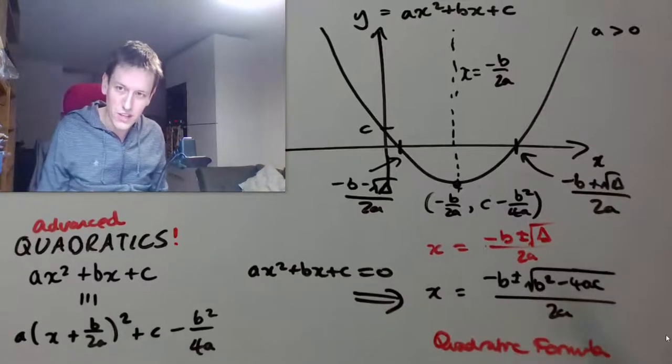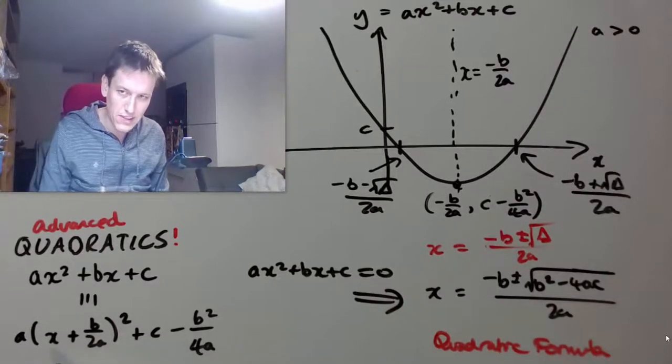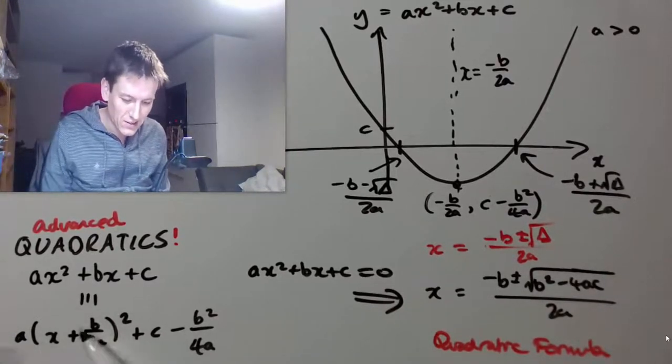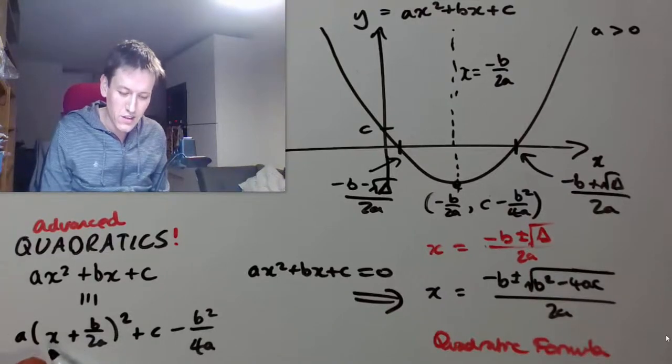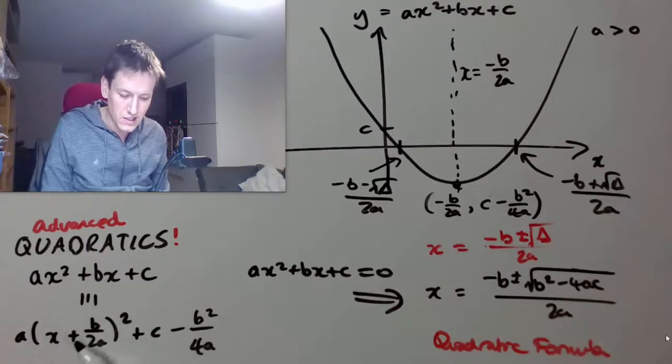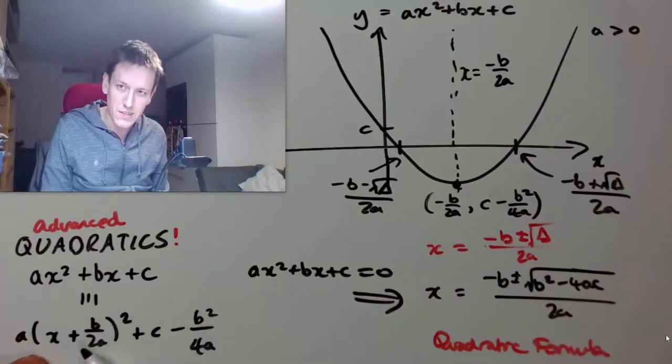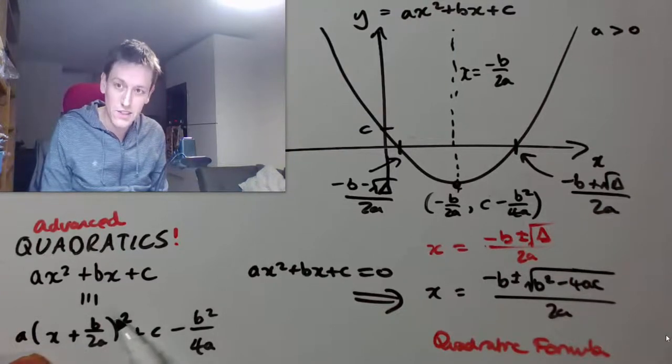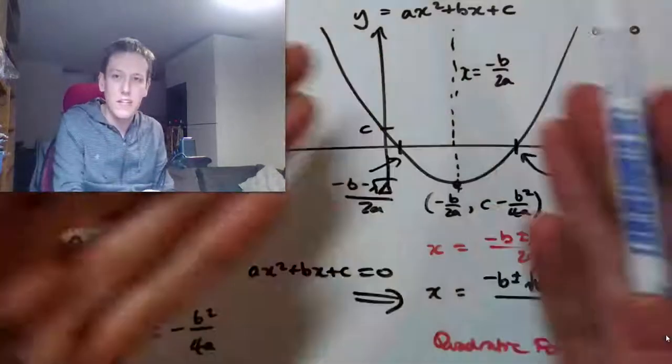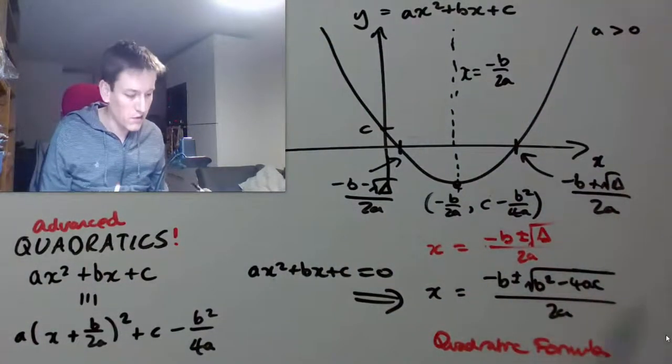And again you can deduce that from the completed square form. If you think about taking the value that makes this 0 and either increasing x by a certain amount or decreasing it by the same amount, then I will have plus or minus a number. So either way it will be the same thing squared that gets added on. So we get this neat symmetry moving away from this point.